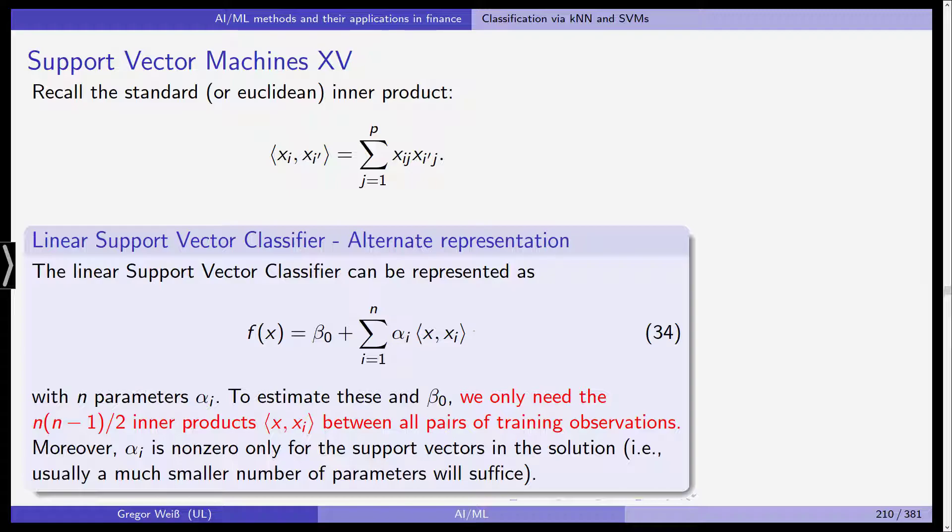Problem is, it might not be enough. A polynomial regression, we've seen that adds some flexibility to our model. Same here, but it might be that we need more non-linearity. So, how can we achieve this?